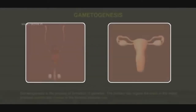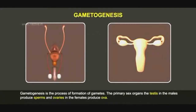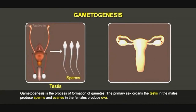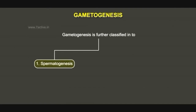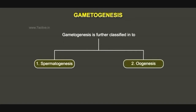Gametogenesis is the process of formation of gametes. The primary sex organs — the testes in males produce sperms, and ovaries in females produce eggs. Gametogenesis is further classified into: 1. Spermatogenesis and 2. Oogenesis.